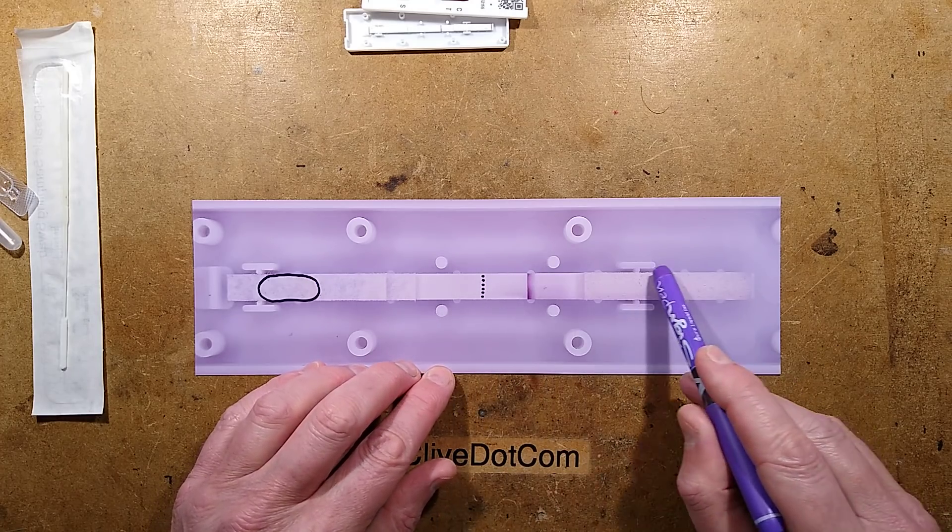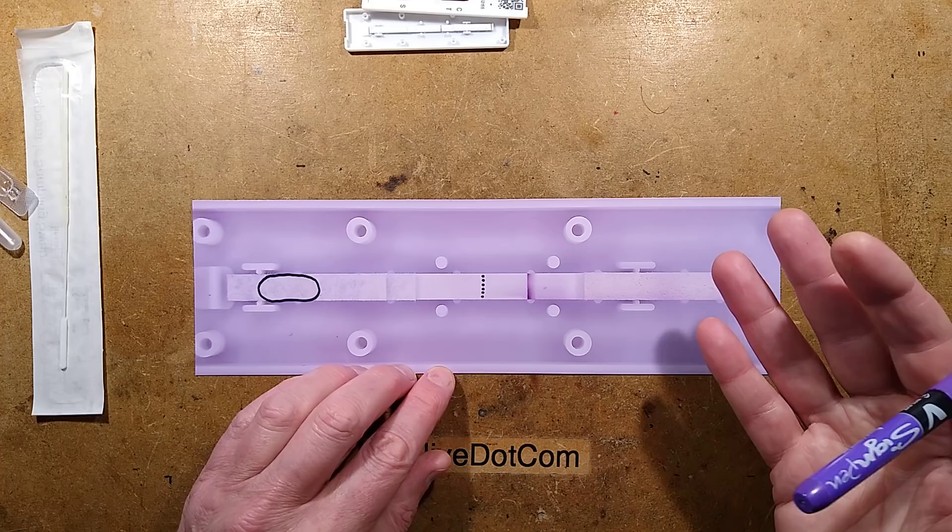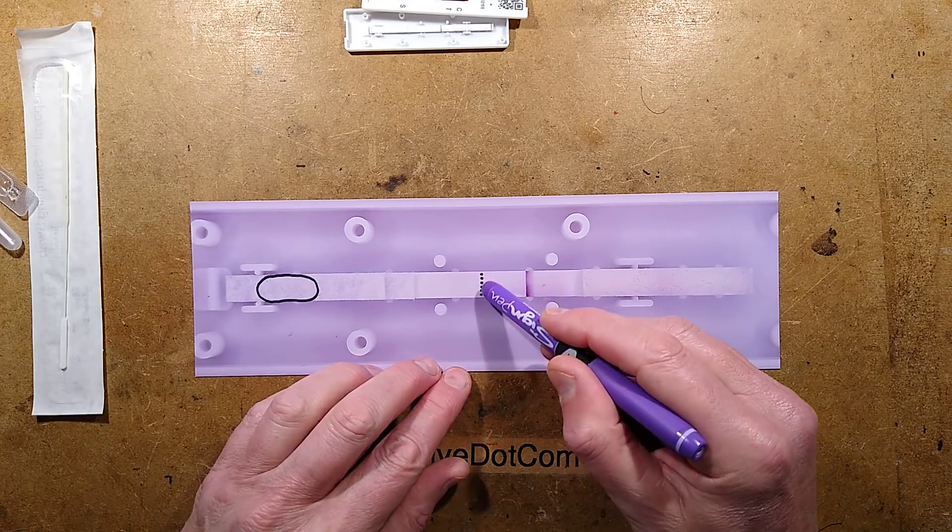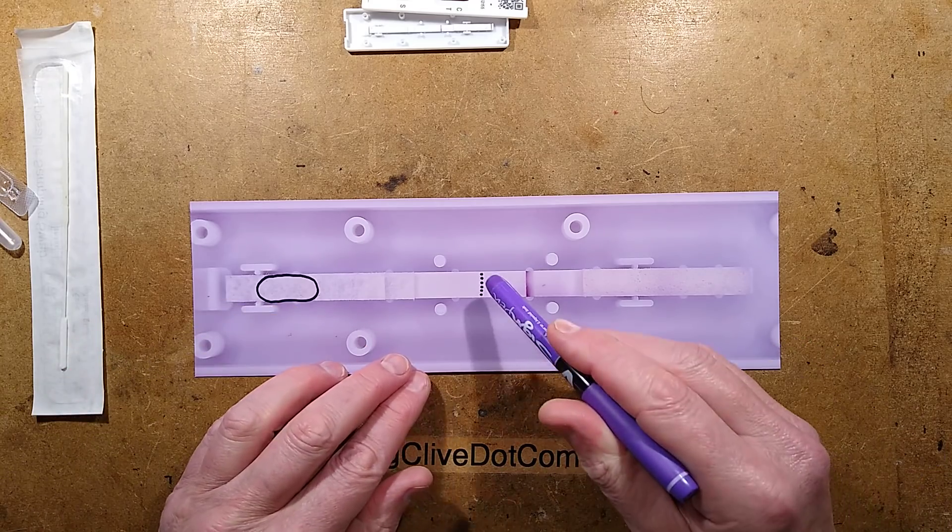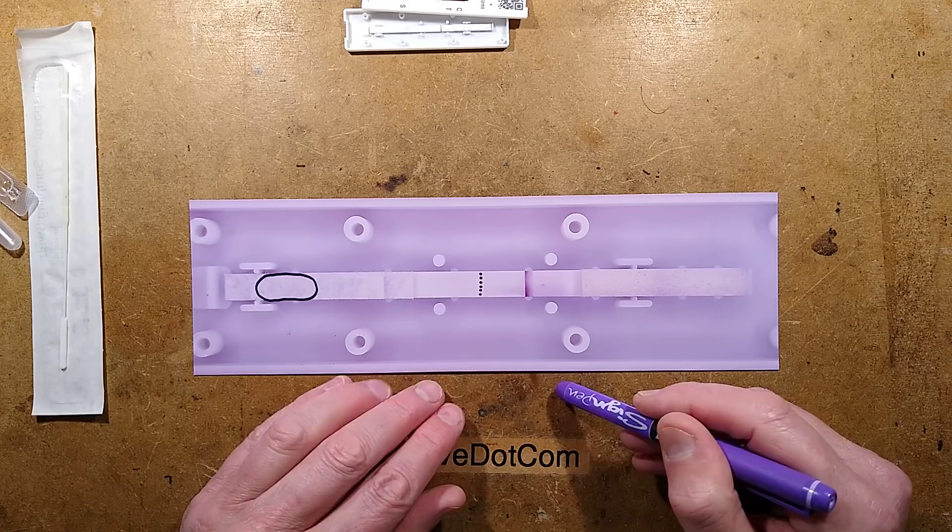The liquid then continues into this pad and that is just basically the waste pad where it just collects all the residue. And that's fundamentally it - just the fact that these antibodies, these little keys that latch onto that signature will make the line visible. That is fundamentally how the test works.